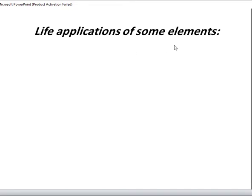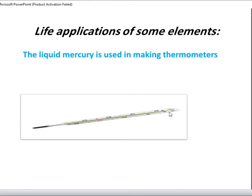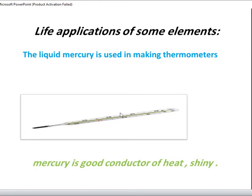Now, life applications of some elements. For example, the thermometer has a liquid inside which is mercury. Mercury is used in making thermometers because it is a good conductor of heat and it is shiny, so I can read the temperature — I can see the numbers and where the mercury has stopped.